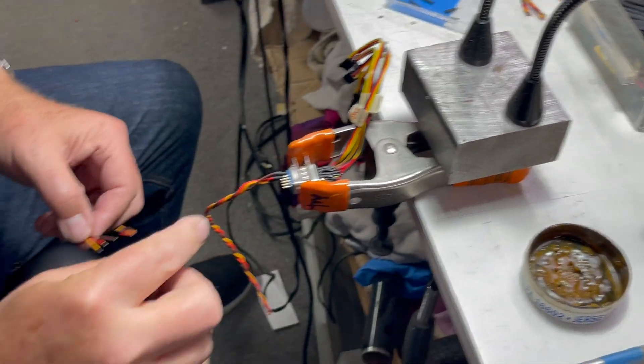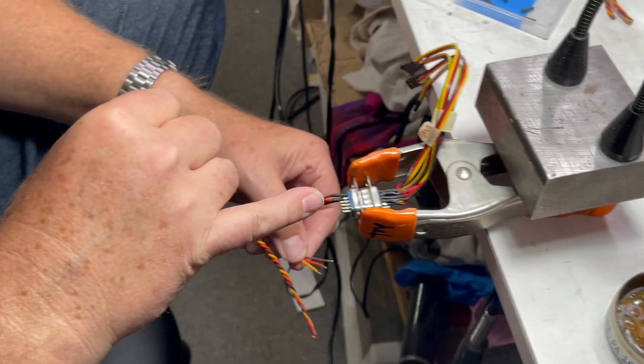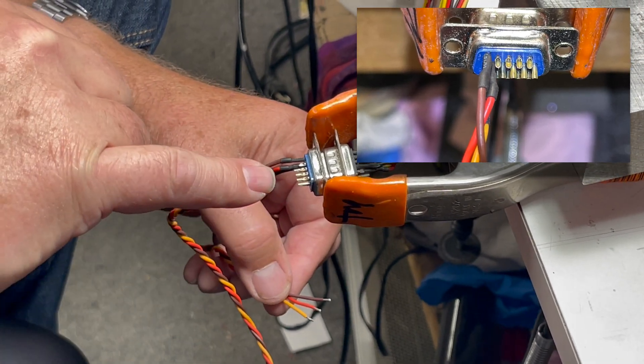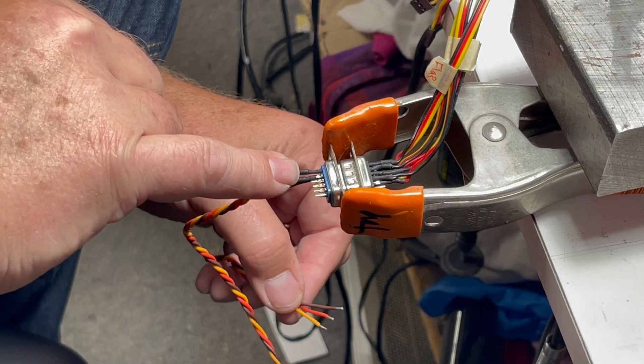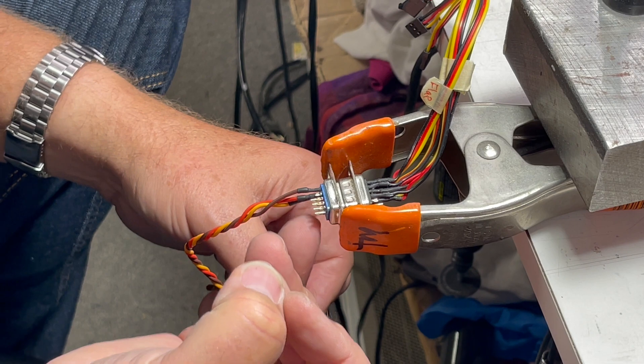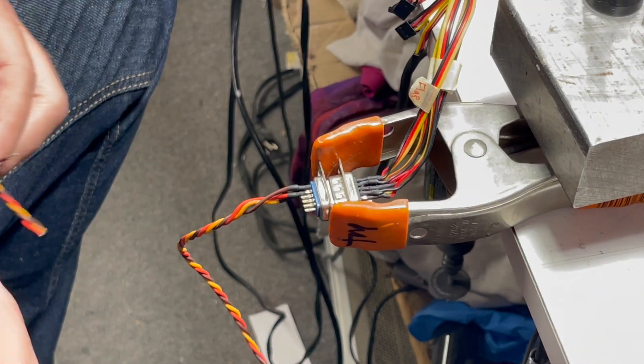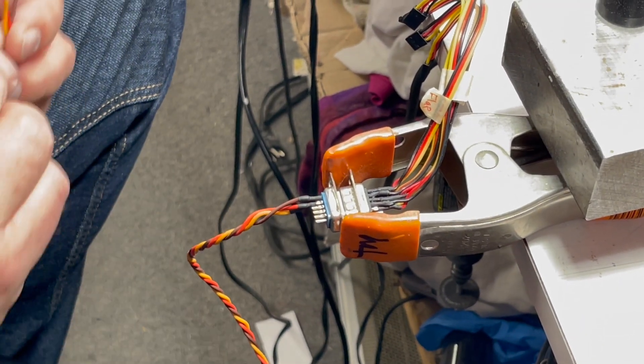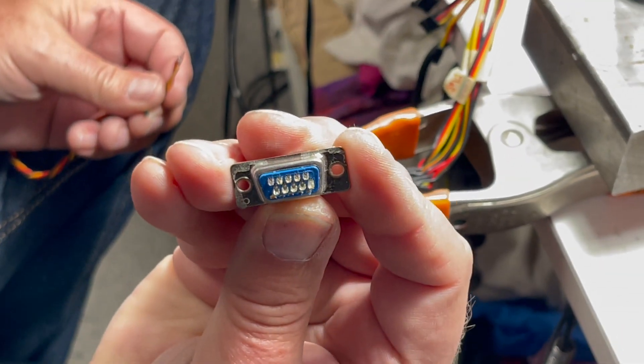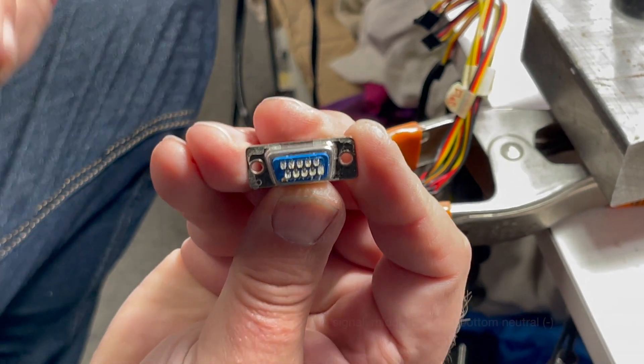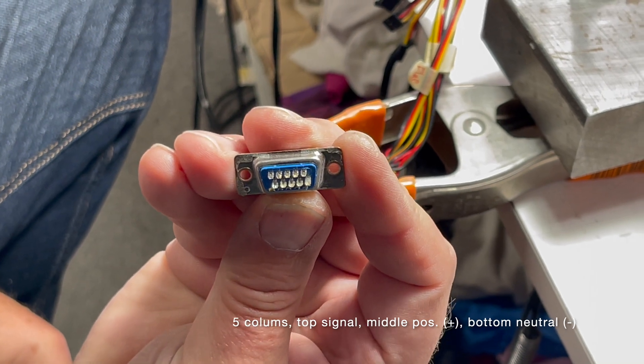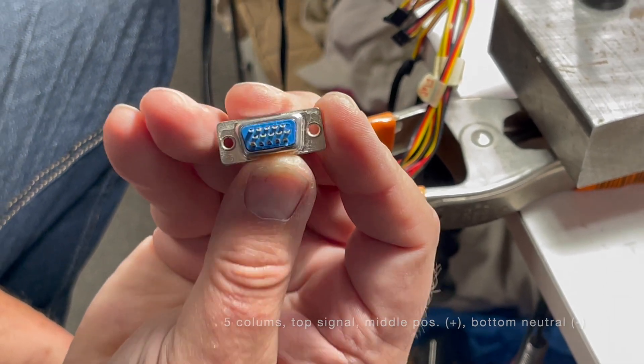What I do is, on the contacts, the center contacts I make those all positive, and then one side I make them all negatives. And then on the other side I make all the top ones the signal wire. And then if you notice here, they're kind of like an arrow, so the first row kind of points over to the right and so on.